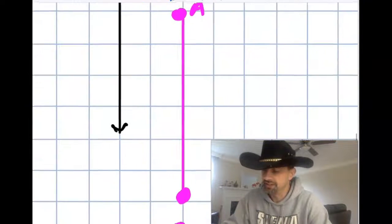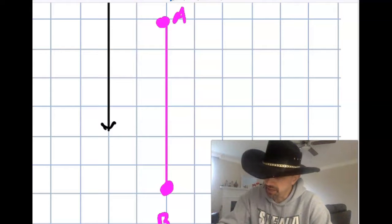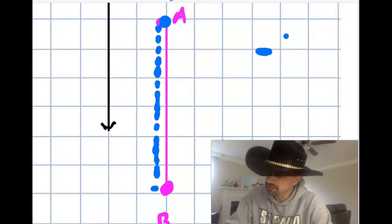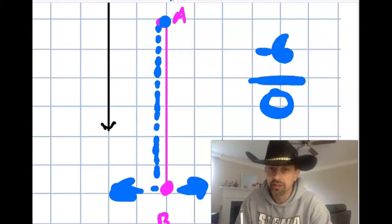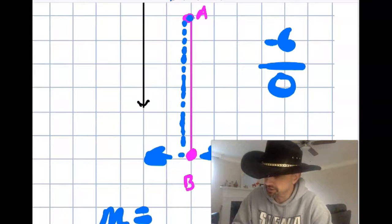If it's like this, a vertical segment or a vertical line, to get from A to B, I had to go down 1, 2, 3, 4, 5, 6. And then over none. You can't have 0 on the bottom of a fraction. So in this case, the slope is called undefined.